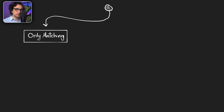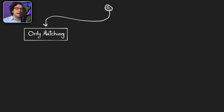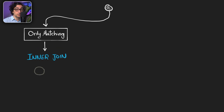If I'm combining two tables and I want to see in the results only the matching data between two tables, then I go and use the inner join. There's no other option for that. So that's simple.